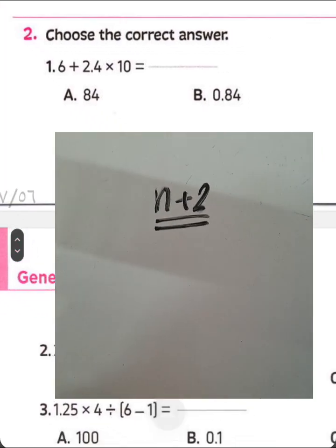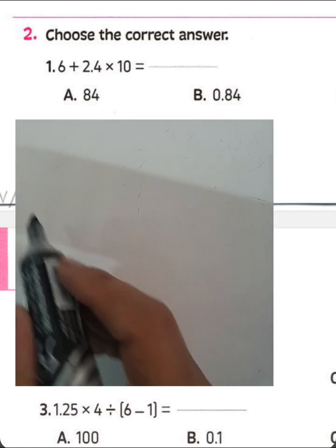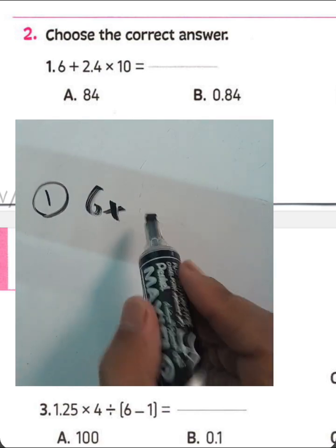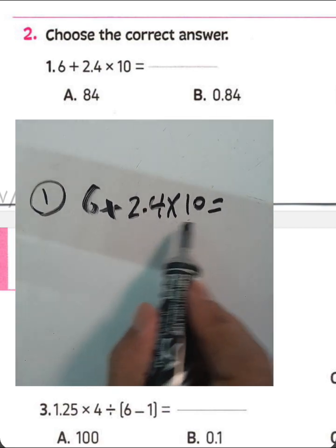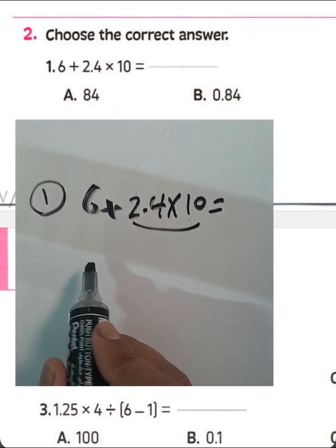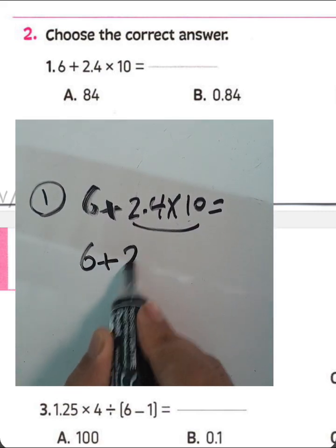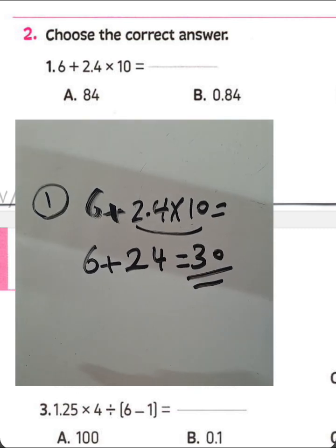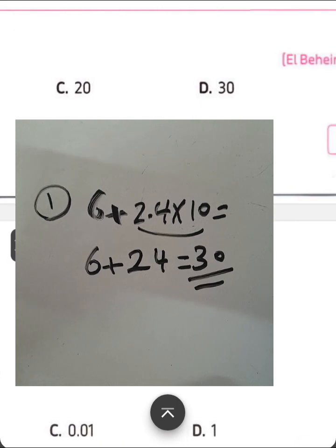Now we solve the correct answer multiple choice questions. Question number 1: 6 plus 2.4 times 10. We know 2.4 times 10 equals 24. So we find the product first: 6 plus 24 equals 30. The result is 30. Choose 30.